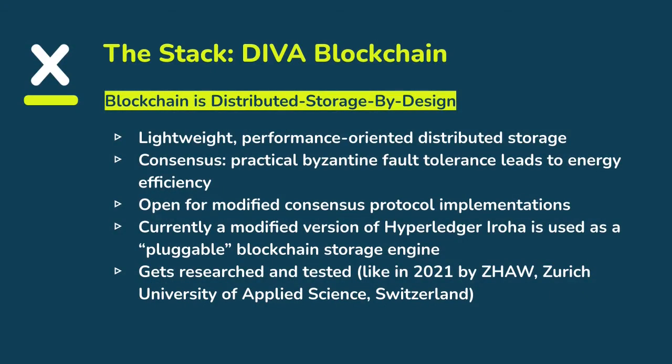The next layer is the storage layer. It has to be fully distributed, so it's a blockchain. We're currently using Hyperledger Iroha, which is a very lightweight and performance-oriented distributed storage. The consensus is simple and leads to energy efficiency, which is very important to us. We're very open to a pluggable blockchain storage engine and also a pluggable consensus protocol implementation. There is also research running on the storage layer by two students, working together with the Zurich University of Applied Science in Switzerland.